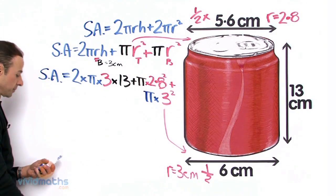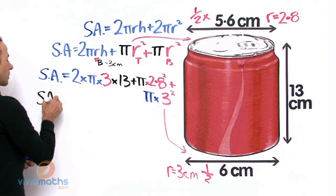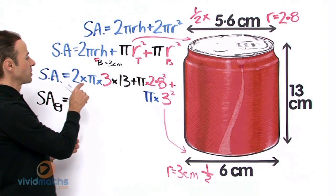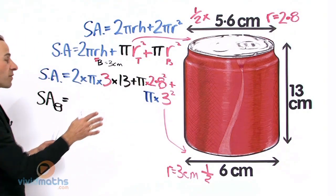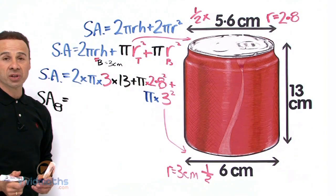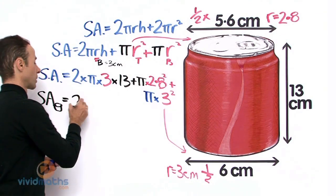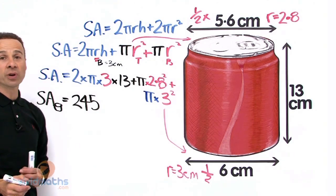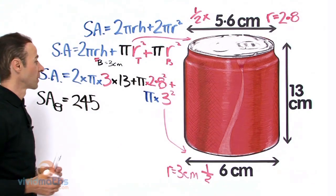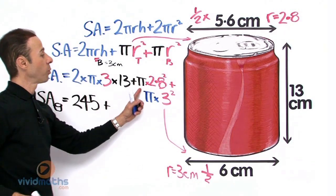So 2 times π times 3 times 13, which is the curved surface. That is going to give us a value to the nearest centimeter squared, that is 245 cm² rounded up.